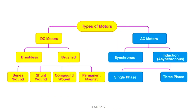There are two main types of motors: DC motors and AC motors. The AC motors are further classified as single phase induction motor, three phase induction motor, and synchronous motor. Similarly, in DC motors there are further subtypes like DC series motor, DC wound motor, shunt motor, and compound motor.